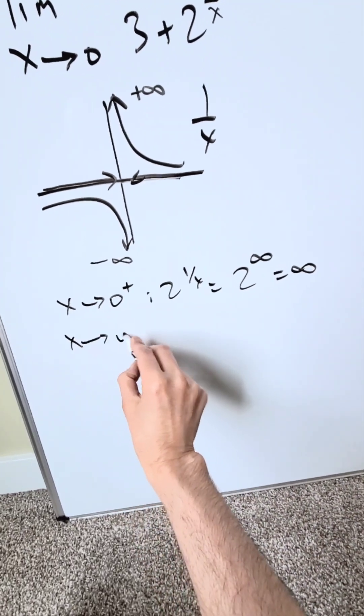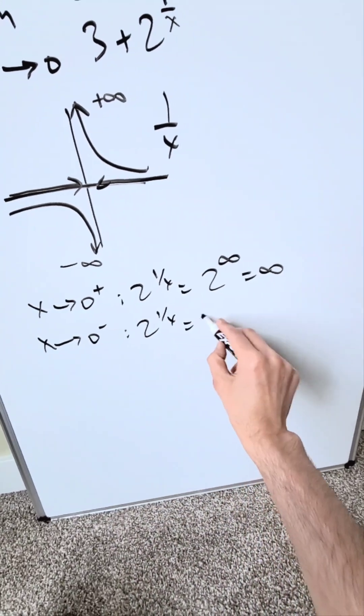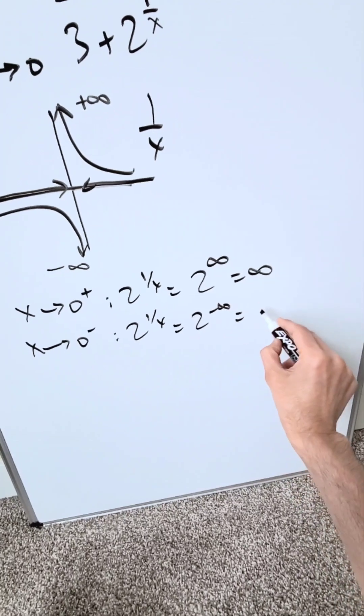From the left of 0, you're looking at 2 to the power of 1 over x, which is 2 to the power of minus infinity. And you know this to be equal to 0.